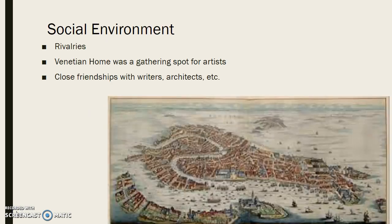His rival was Giorgione, whom he outlived, yet he still had close friendships with other artists. His Venetian home was a gathering spot for such artists. Not much is known about his personality, but in comparison with Michelangelo, it is said that he is not as charismatic.